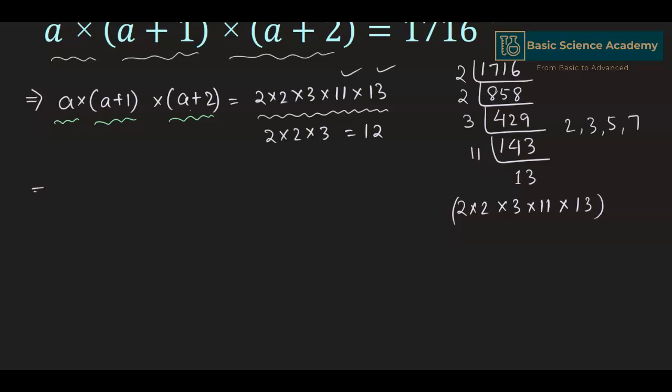Hence this gives us a × (a + 1) × (a + 2) = 11 × 12 × 13.